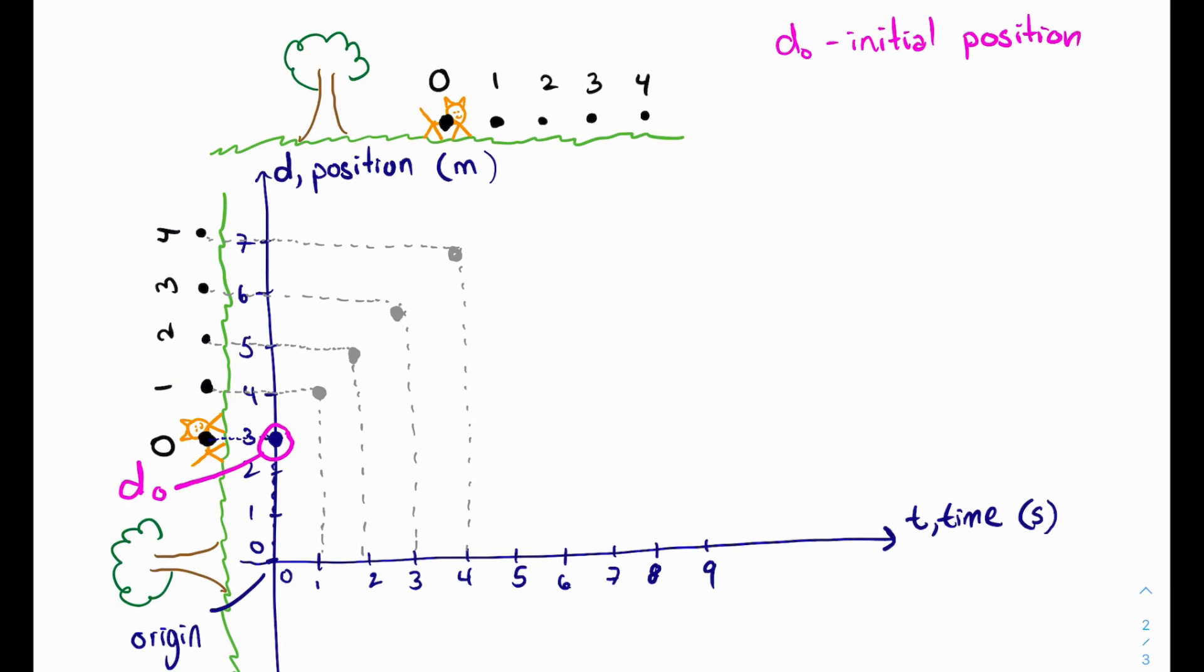And any time after that, it's going to be called D1, D2, D3, and so on, depending on the time that we're considering. So D1, D2, D3, D4, and so on. That's how we label the rest of the positions.